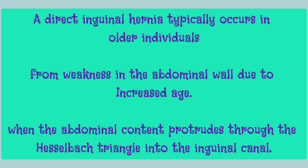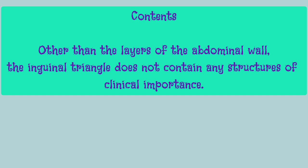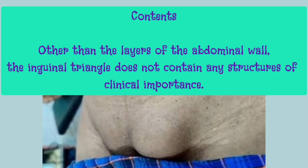A direct inguinal hernia typically occurs in older individuals due to weakness of the abdominal wall, when the abdominal content protrudes through the Hesselbach's triangle into the inguinal canal. This triangle does not contain any important structures — it has only layers of the abdominal wall.